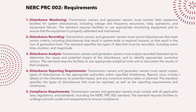For disturbance reporting, transmission owners and generator owners must report certain types of disturbances to the appropriate authority within a specified time frame. The report should include details on the disturbance impact, what actions have been taken, and what actions are planned. The standard specifies the types of disturbances that must be reported, the reporting requirements, and the time frames. Each utility must comply with all requirements and maintain appropriate records to prove compliance.